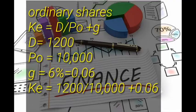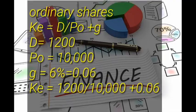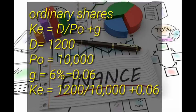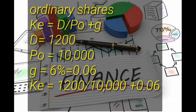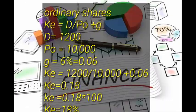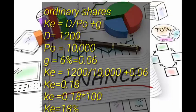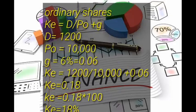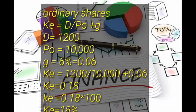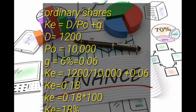For the specific cost of ordinary shares we use the formula D over P₀ plus g, where D (dividends) is 1,200, P₀ (market value) is 10,000, and g (growth rate) is 6 percent or 0.06. Substituting: 1,200 divided by 10,000 plus 0.06. Using the calculator, the cost of equity is 0.18 — multiplied by 100, the specific cost is 18 percent.